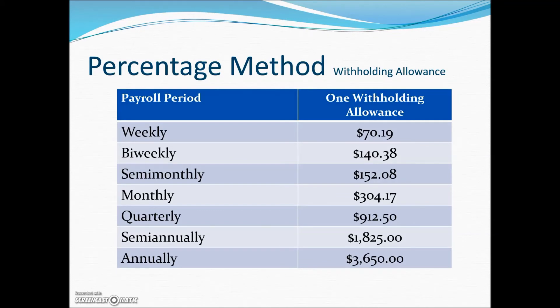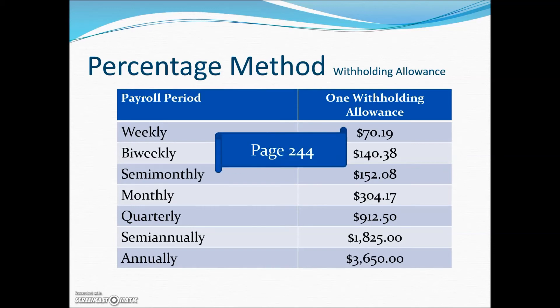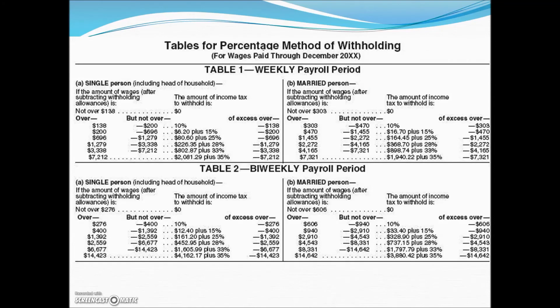The table showing the withholding allowance based on the frequency of the payroll can be found in your textbook. The second part is based on tables depending on the frequency of pay — weekly, bi-weekly, semi-monthly, and monthly. The left-hand side covers individuals with single marital status and those with married marital status. From there you read across to determine the amount of withholding based on the individual's income.